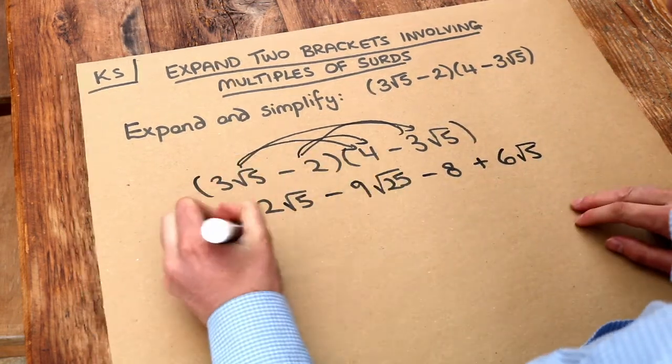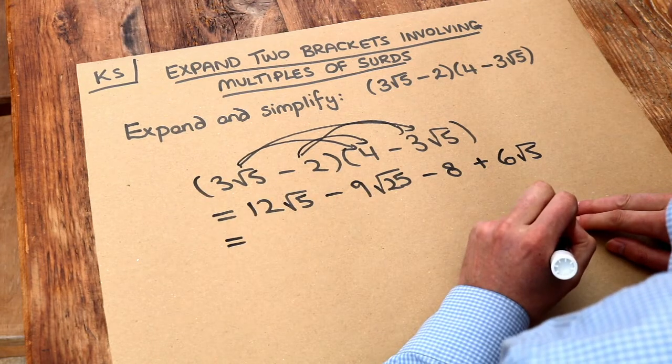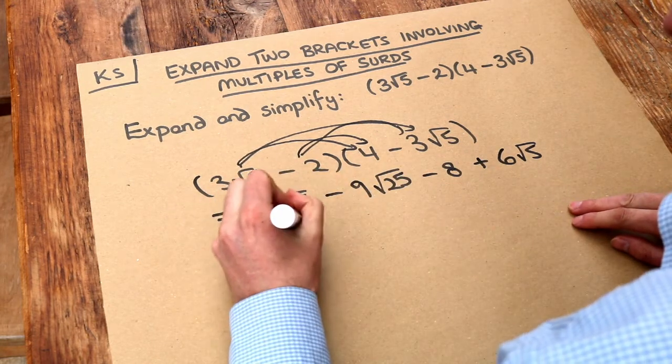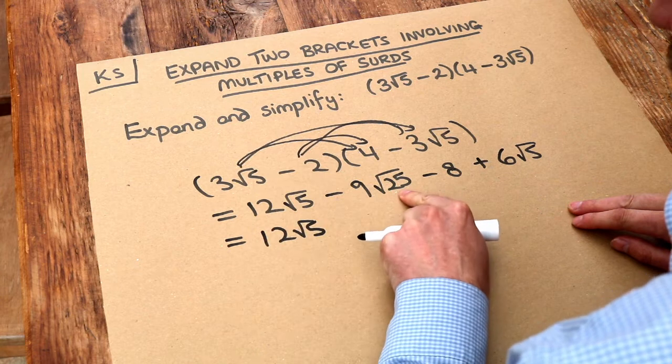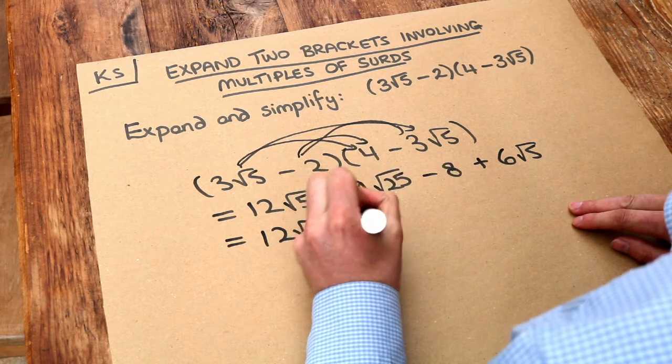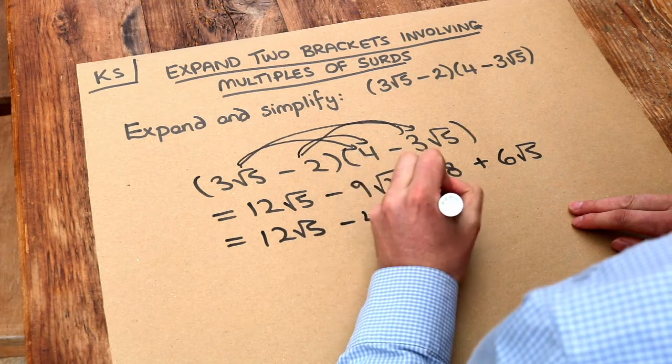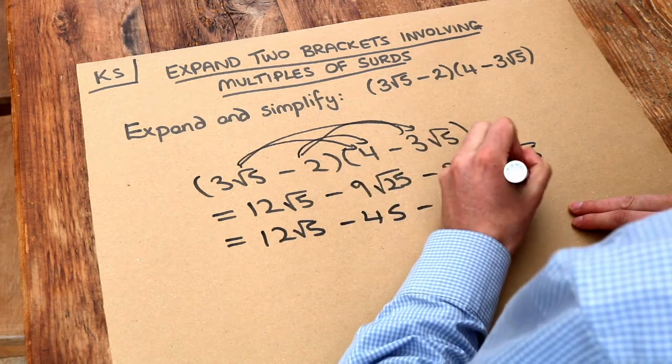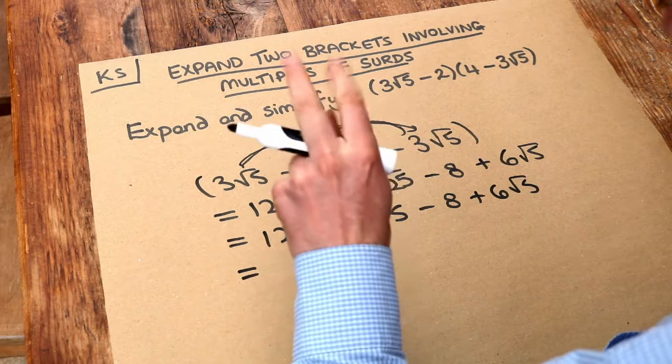Now once we've got this far, we can just simplify what we have. So we've got twelve root five. Now the square root of twenty-five is just five. Nine times five is forty-five, so it's minus forty-five. We've got the minus eight and the plus six root five.